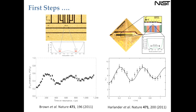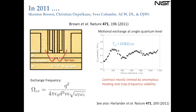Here are plots from that work. Kenton Brown's setup is shown. These plots show motional exchange — the energy exchange produced when ions are cooled to the ground state, one phonon is placed in one ion, and we watch that energy exchange back and forth. You can see the flopping that's occurring, with a similar result from the Innsbruck group. Both experiments were done in surface traps.